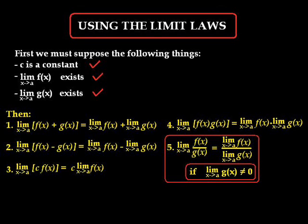Five: the limit as x approaches a of f of x divided by g of x is equal to the limit as x approaches a of f of x divided by the limit as x approaches a of g of x, provided that the limit as x approaches a of g of x cannot equal zero, because we are not allowed to divide by zero.